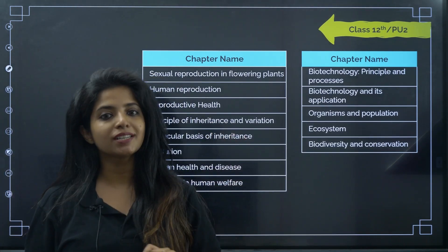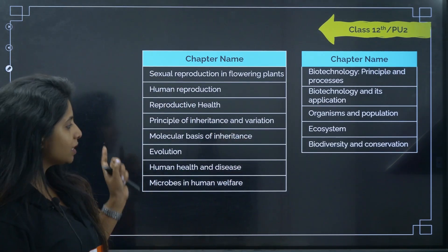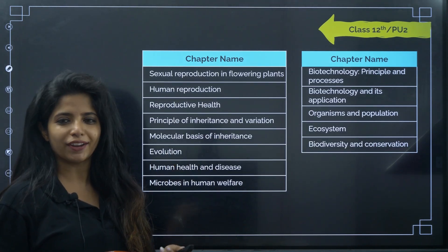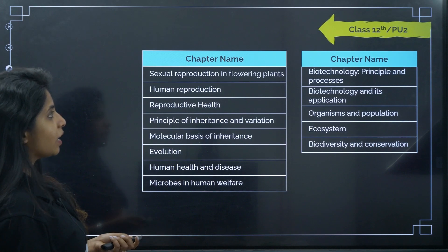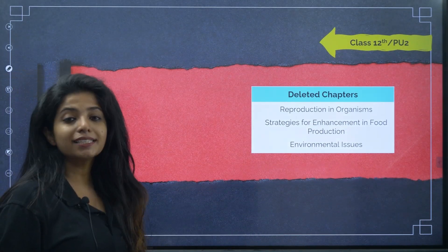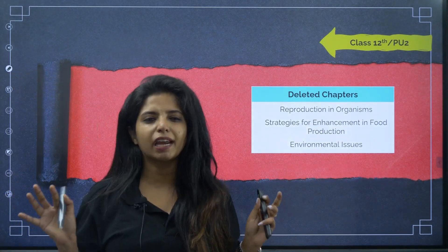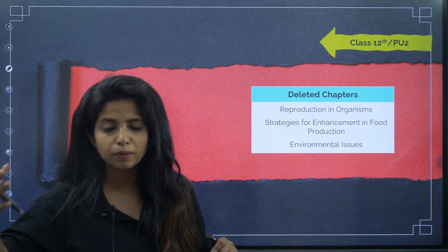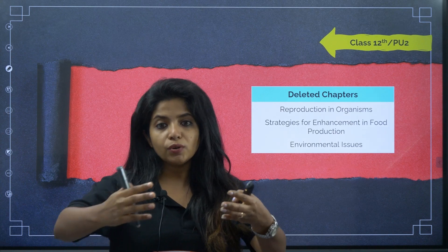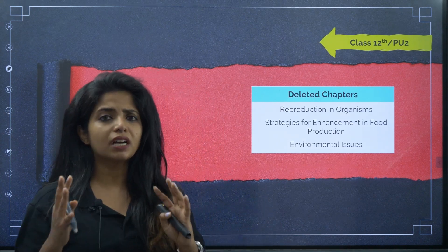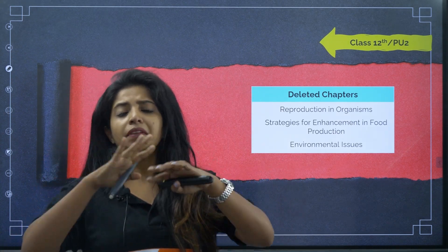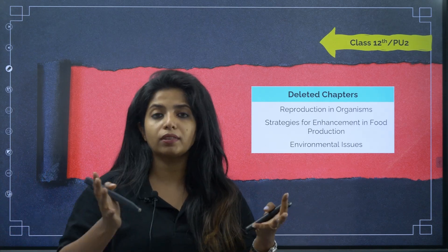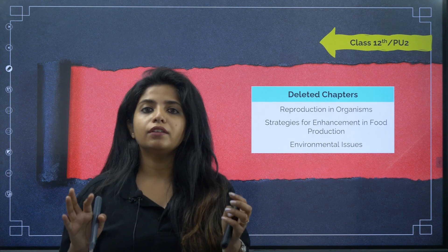You can take a screenshot of the chapter list if you'd like. Now I want to talk about something very important: deleted chapters. This slide is important because sometimes you borrow books from people who just passed out, and those books do not have the rationalized content. The NCERT team cut down content that is no longer needed and released a new rationalized content book.